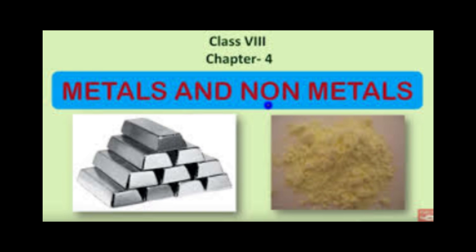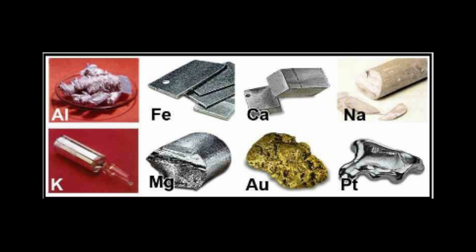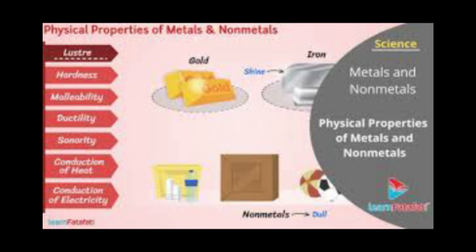Elements have been classified into two groups based on their physical and chemical properties. Metals such as iron, copper, tin, silver, gold, etc. In general, metals have many properties such as rigidity, hardness, and lustrous nature. We are going to learn in detail.